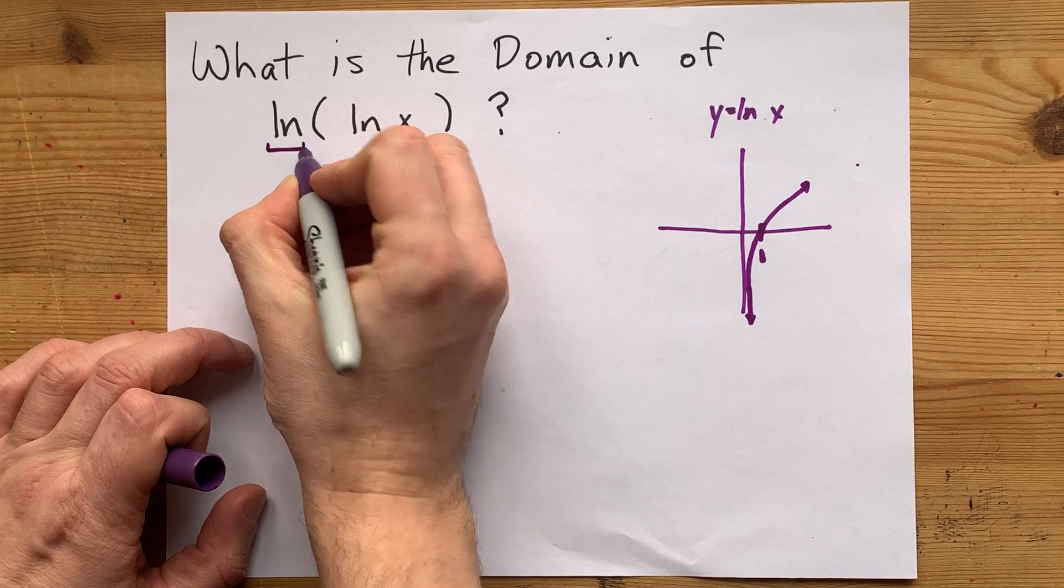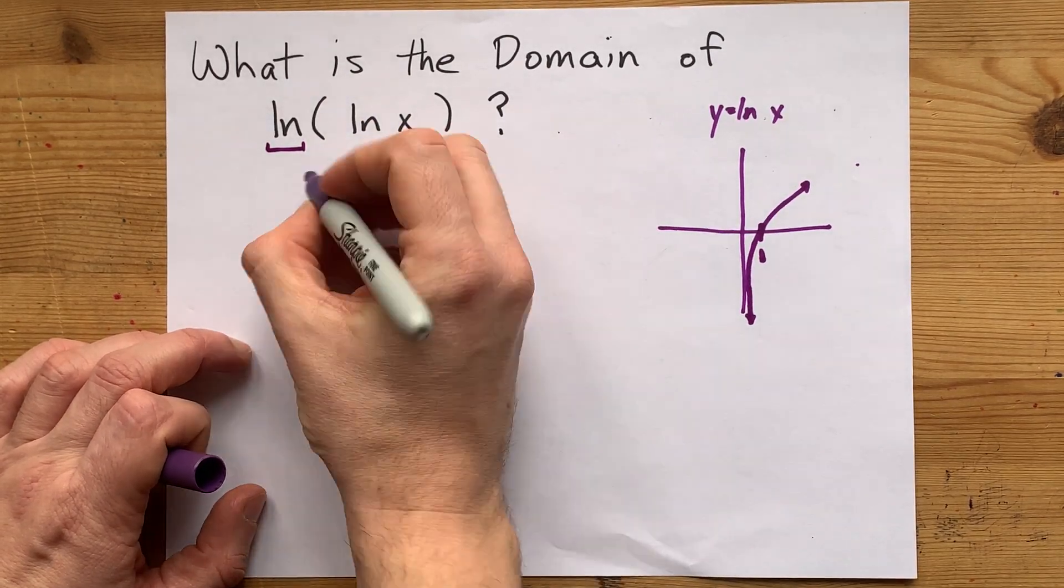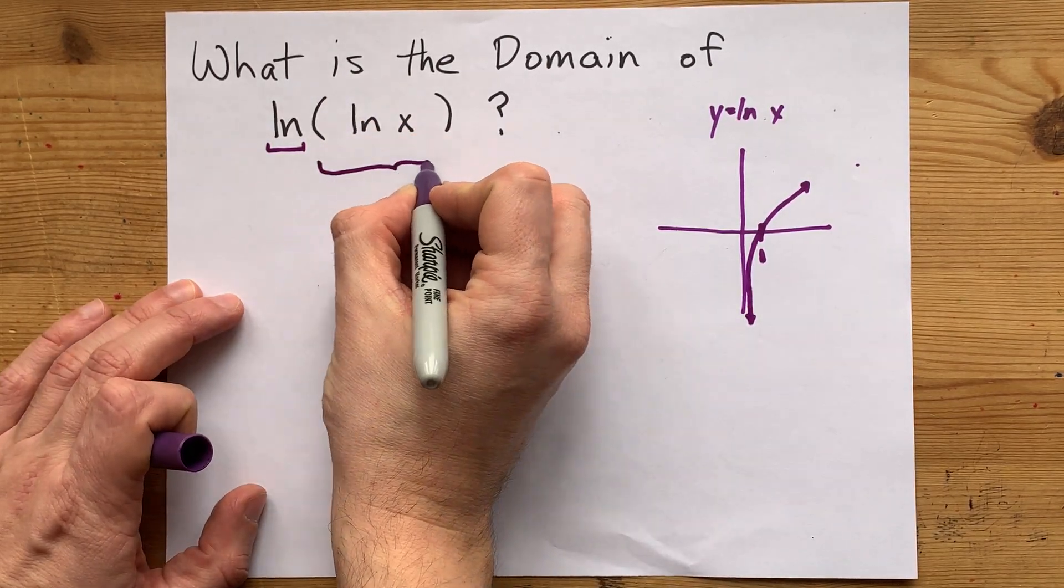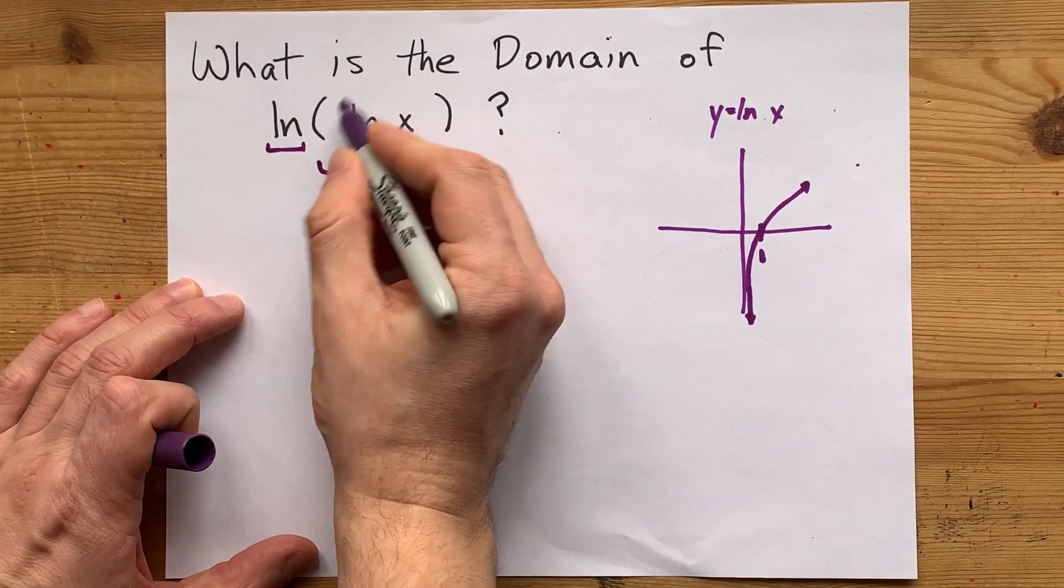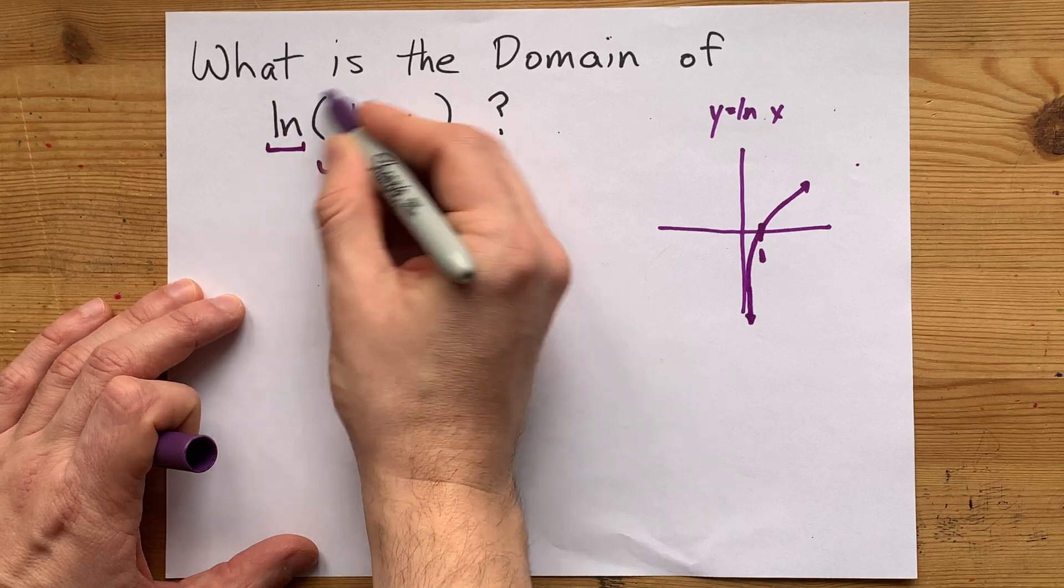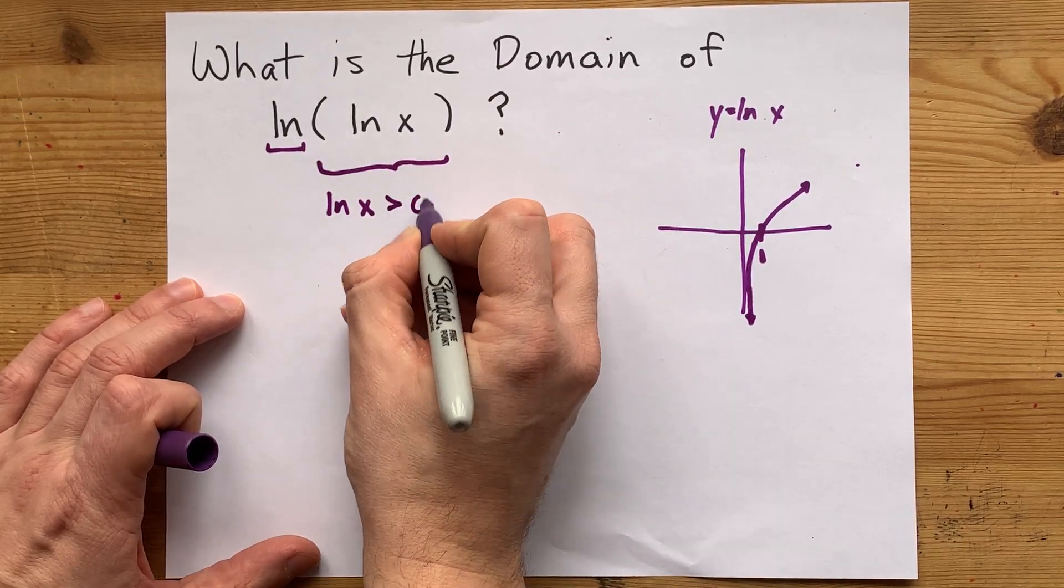When you do this ln or natural logarithm, you're only ever allowed to take it when the value of this ln x, or what's inside or what you're taking the ln of, is greater than 0. Because lning anything, you can only ln things that are positive or greater than 0.